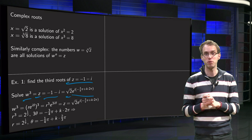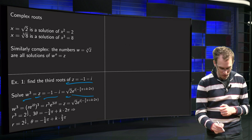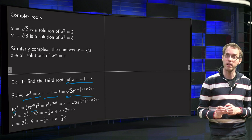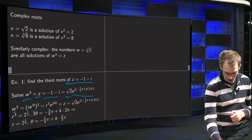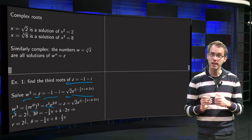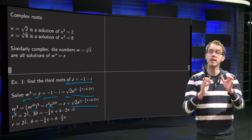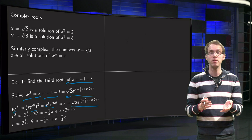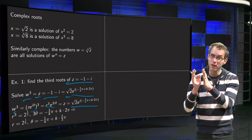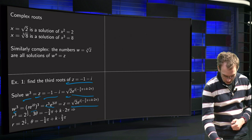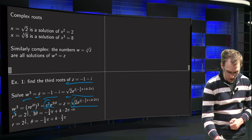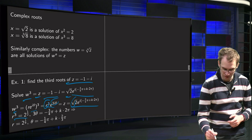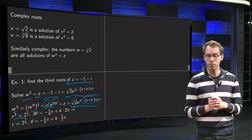The next step is to write the root w in polar form. We write w equals r times e to the power iθ, so w cubed equals r cubed times e to the power 3iθ. That has to equal z, so comparing, we see one complex number in polar form equals another. Those are only equal if their norms are equal and their arguments are equal. So r cubed has to equal the square root of 2, and 3θ has to equal minus 3π/4 plus k times 2π.